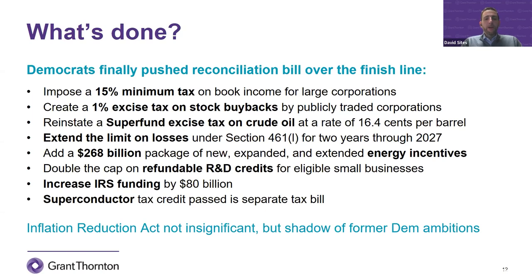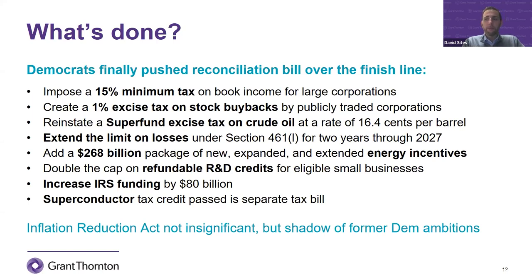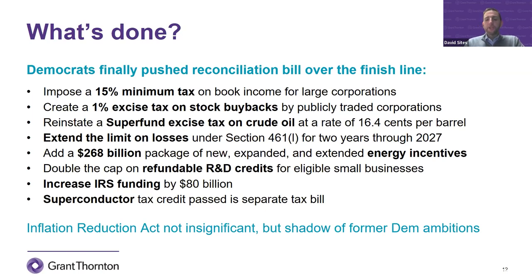It'll be interesting to watch how that $80 billion rolls out — whether that's increased audit rates or better programs for taxpayers to come into compliance. Multinational corporations should pay particular attention to IRS activity over the next decade. There was also a huge semiconductor bill passed separately from the Inflation Reduction Act, providing significant credits for investments in semiconductor plants located in the United States — in response to the heavy reliance on Asian semiconductor production — to pull that production back closer to the United States.